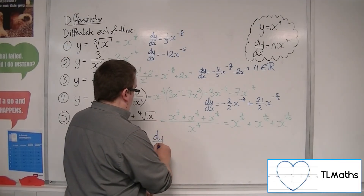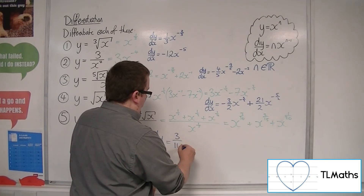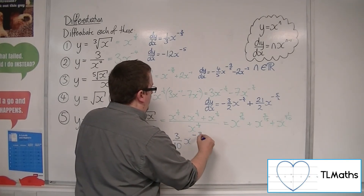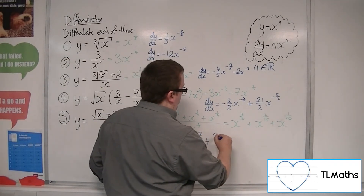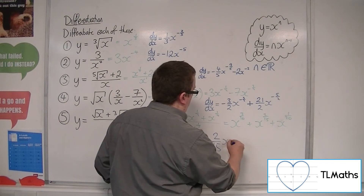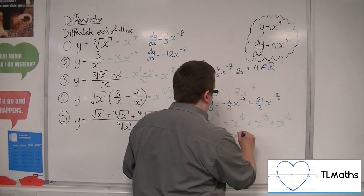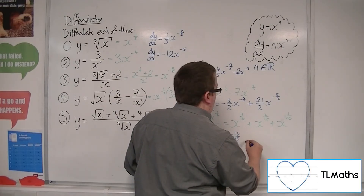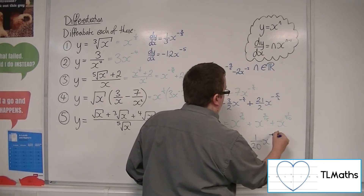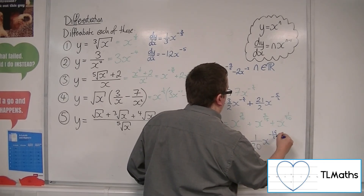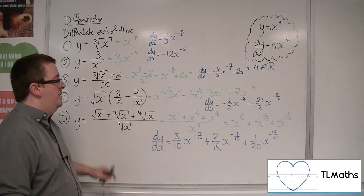dy/dx is equal to three tenths x to the minus seven tenths, because we take one off the power. Then plus two fifteenths x to the power two fifteenths take away one, so minus thirteen fifteenths. And then the one twentieth comes down to the front, take one off the power, so minus nineteen twentieths. And that is the gradient function for number five.